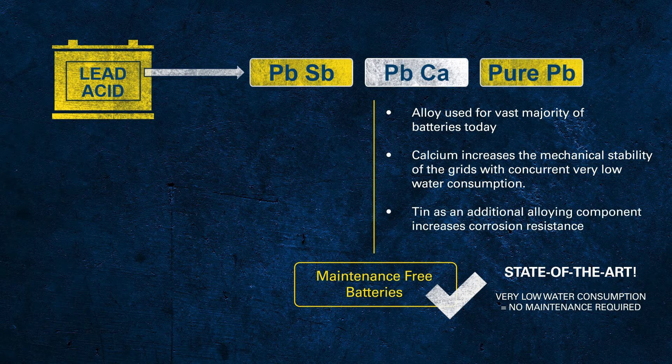We also add tin to the alloy in order to increase the corrosion resistance of the grids. It is indeed a science in itself to find the right composition of individual materials. We have several chemists who are constantly working on the right alloys and recipes for our active mass.